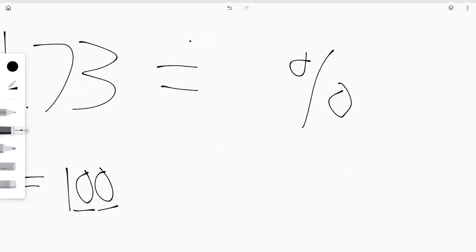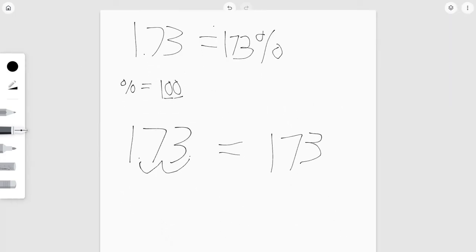So 173 percent is equal to 1 and 73 hundredths. We can also keep in mind hundreds for these problems as a second and optional method of converting this problem.